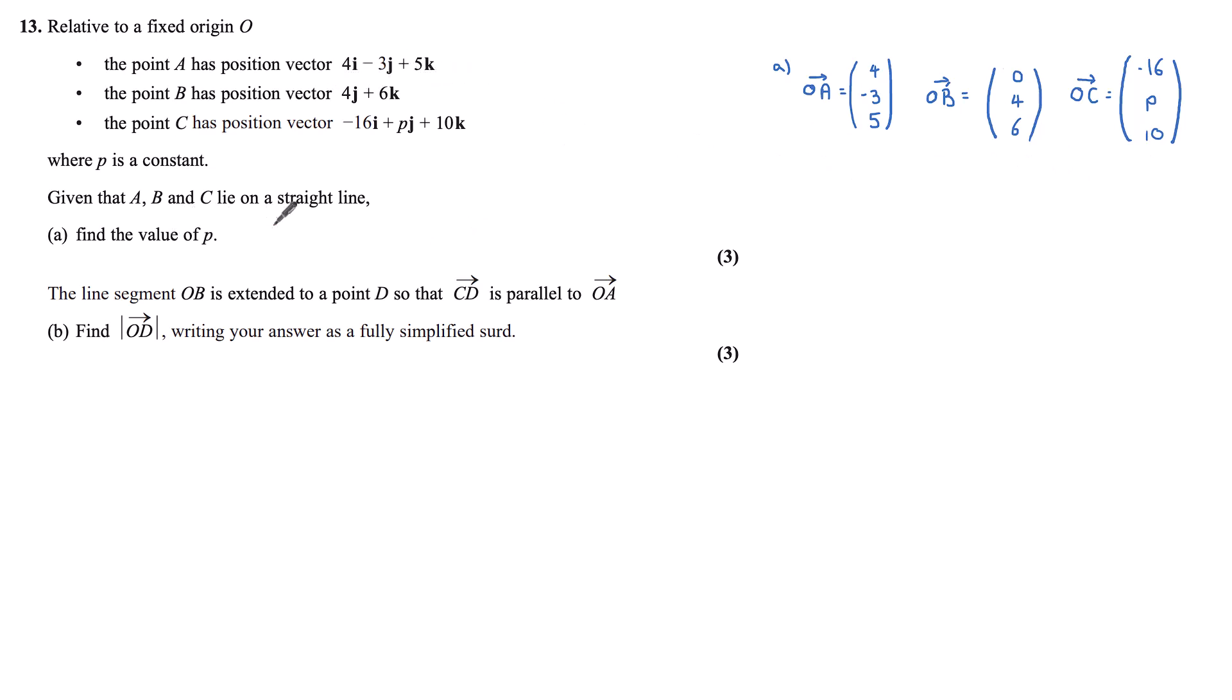Now, since A, B, and C are on a straight line, I know AB to be a multiple of BC, or BC to be a multiple of AB. So the first thing I'm going to do is find my vectors AB and BC.